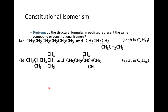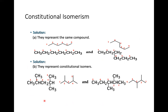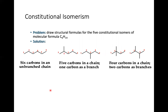Problem: do the structural formulas in each set represent the same compound or constitutional isomers? These represent the same compound. Writing it in line angle form, you number and count the carbons — there are six — so starting from one through six, you get hexane. These are constitutional isomers: you can draw them in two different ways.